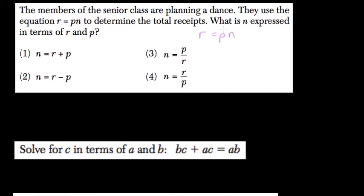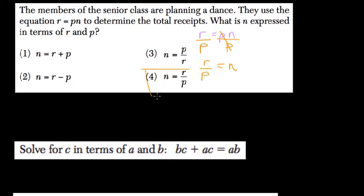So they want us to isolate N. N is the variable we want all by itself. The only thing we need to do to get N all by itself is divide both sides by P, because P times N is R. P divided by P is 1, and N equals R divided by P, which is choice 4.